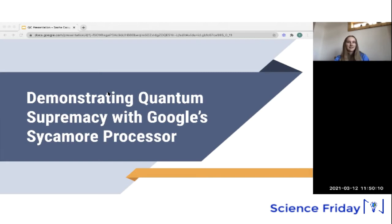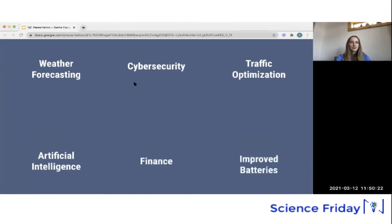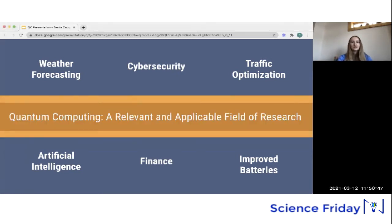So today, I'm going to be presenting on how Google demonstrated quantum supremacy with its Sycamore processor. So I want to start with a question. And that is, what do weather forecasting, cybersecurity, traffic optimization, AI, finance, and improved batteries all have in common? And I'll give you a few seconds to think about this. So the answer is that these are all areas that can be improved. And more specifically, quantum computing is a tool that can improve them. So quantum computing is a very relevant and applicable field of research.